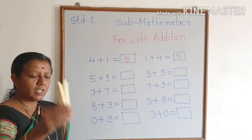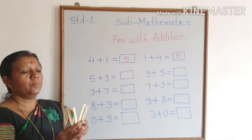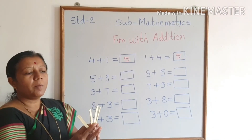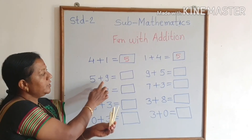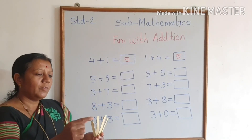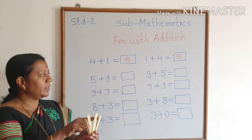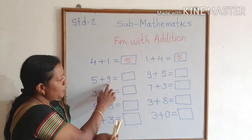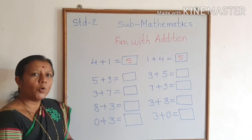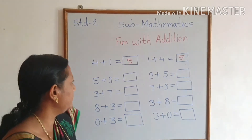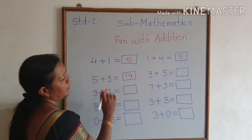1, 2, 3, 4, and 5. So 5 plus 9 — how many did it become? 14.